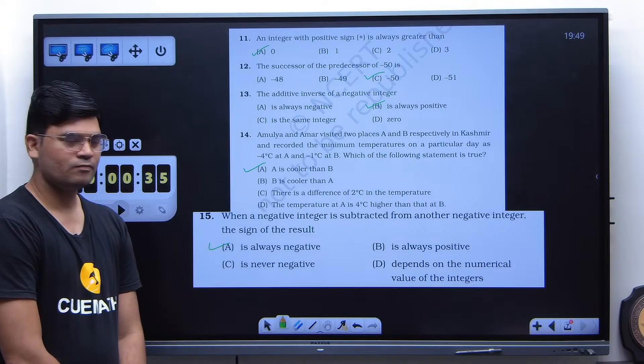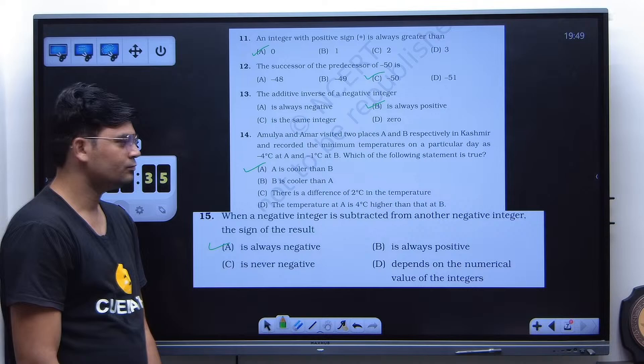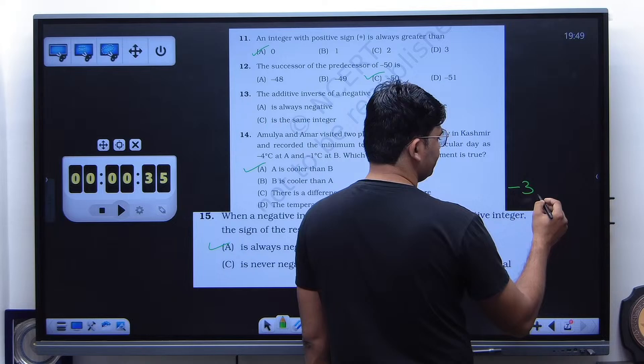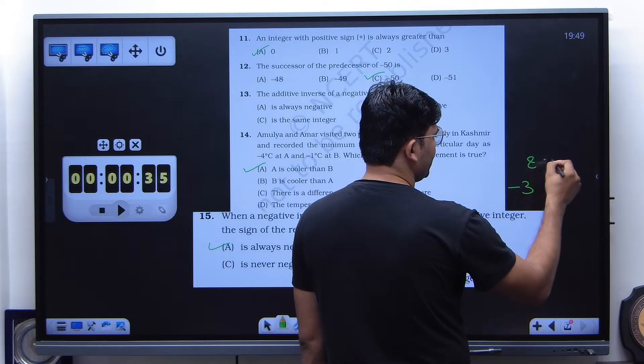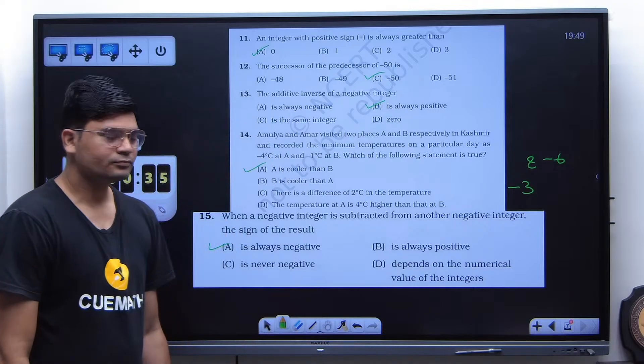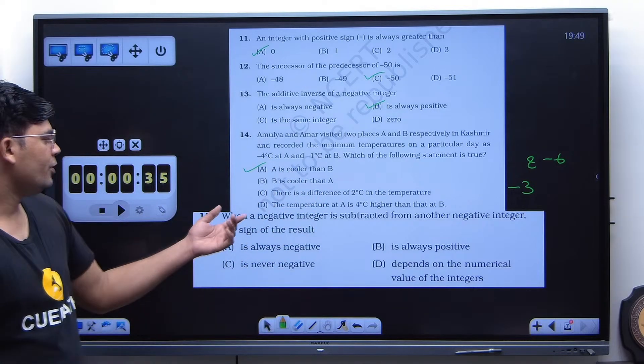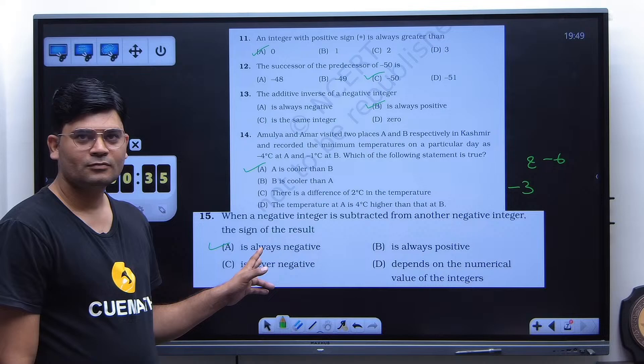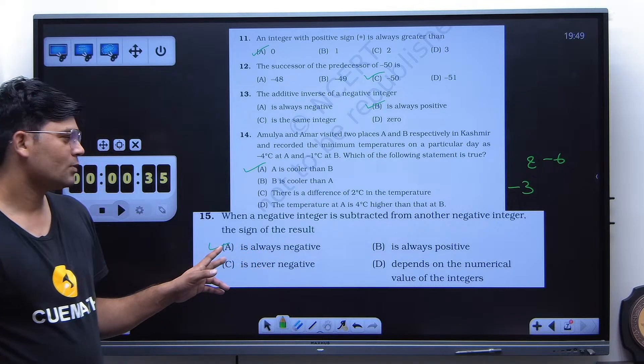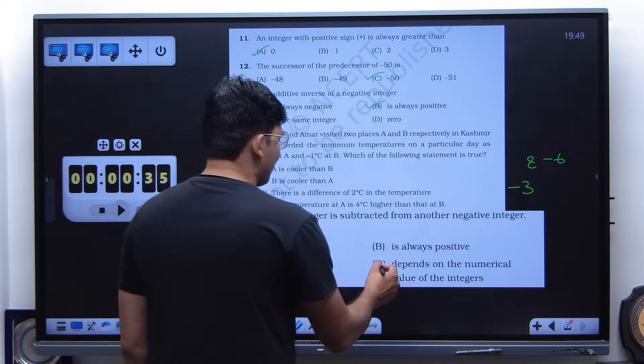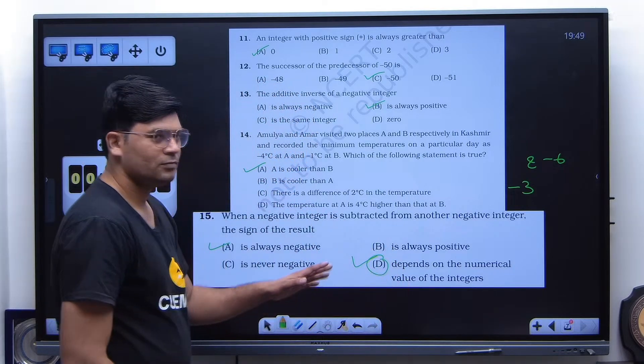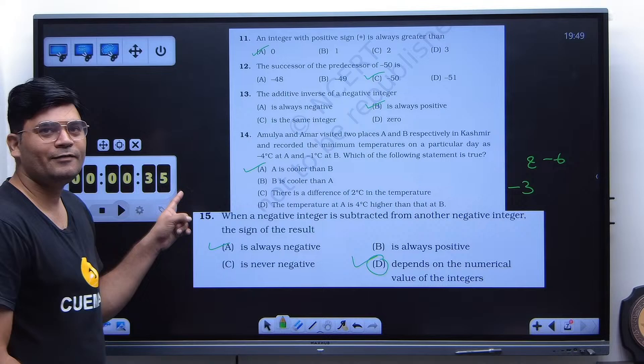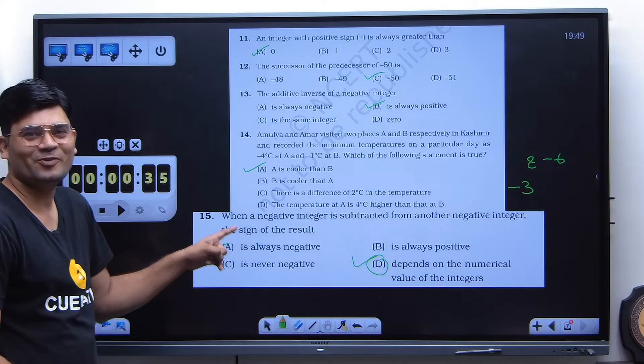How? Because, for example, on the number line you're on a number and you want to subtract. Take numbers minus 3 and minus 6. Take these two numbers. When a negative integer is subtracted from another negative integer, you said A, right? Oh yeah, it will be D. What is the option? D. So these are the traps. These are the traps. Be careful.